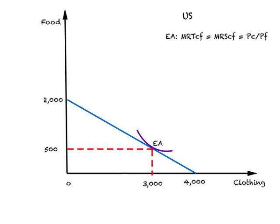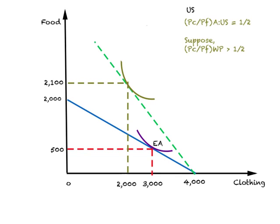This purple curve represents the community indifference curve. In the case of a straight-line PPC, the point of tangency represents equilibrium for the U.S. in autarky. Since we are looking at autarky, production and consumption of each item must be equal. So the U.S. will produce and consume 3,000 units of clothing and 500 units of food in autarky. EA represents equilibrium in autarky, which is both the consumption equilibrium and the production equilibrium.